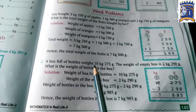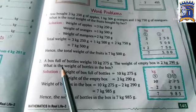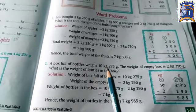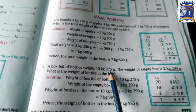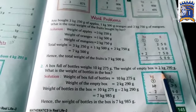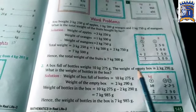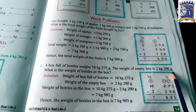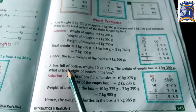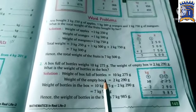Next one is, a box full of bottles weighs 10 kg 275 grams. The weight of empty box is 2 kg 290 grams. Now what is the weight of bottles in the box? So here we will do subtraction.